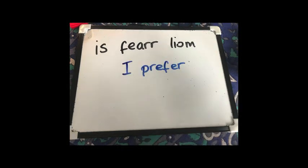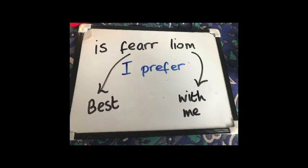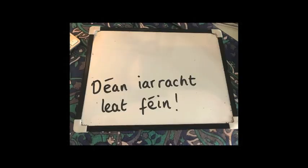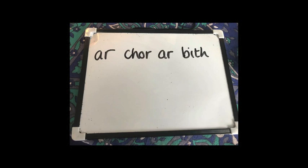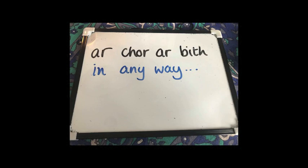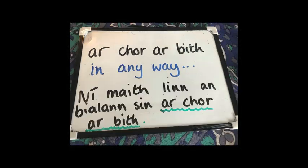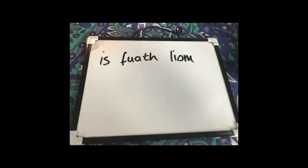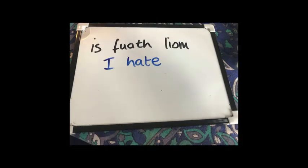'Is fearr liom' means 'I prefer'. If you break it down, fearr being 'best' and liom like we saw earlier means 'with me', so something is best with me — is fearr liom. Try and make a sentence up yourself with that. Another one was 'ar chor ar bith', which means 'in any way', 'at all'. You could use it in a sentence: ní maith linn an bialann sin ar chor ar bith — we don't like that restaurant at all.